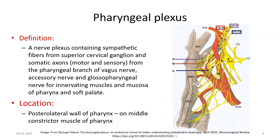The purpose of this plexus is to innervate the muscles and mucosa of the pharynx and soft palate. In the picture you can also see the common carotid artery, the external carotid artery and its branches — the superior thyroid artery, lingual artery, facial artery — the ascending pharyngeal, and the internal carotid artery. In summary, it is a nerve plexus containing sympathetic fibers, pharyngeal branches of the vagus, the accessory nerve, and the glossopharyngeal nerve.